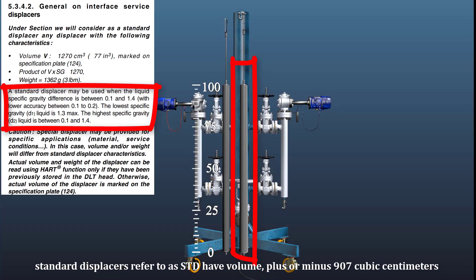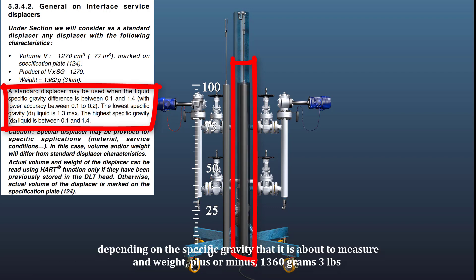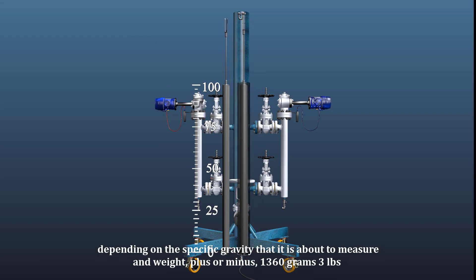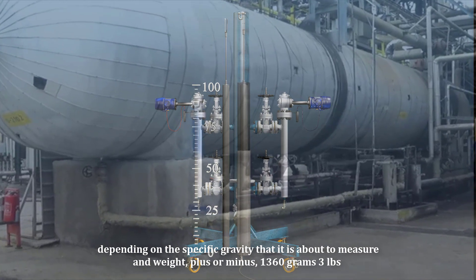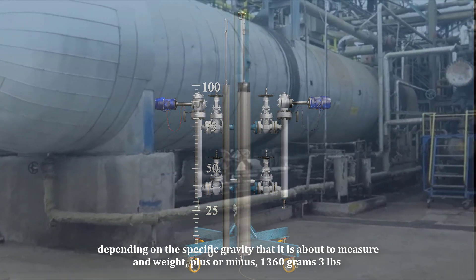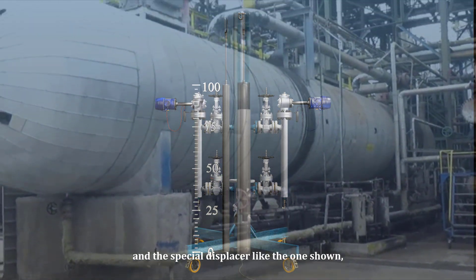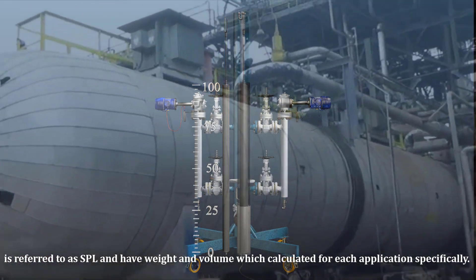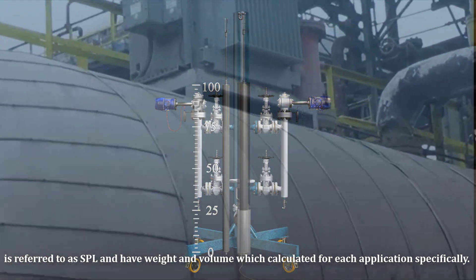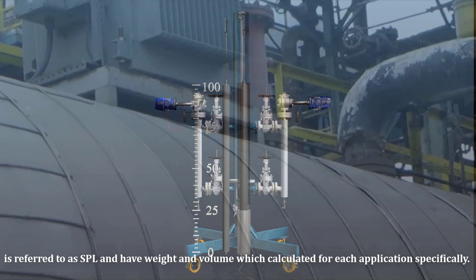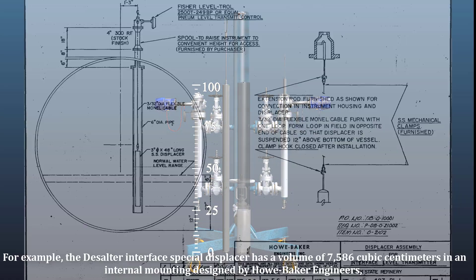Standard displacers referred to as STD have volume plus or minus 907 cubic centimeters, depending on the specific gravity that it is about to measure, and weight plus or minus 1,360 grams or 3 pounds. And the special displacer like the one shown is referred to as SPL and have weight and volume which are calculated for each application specifically.